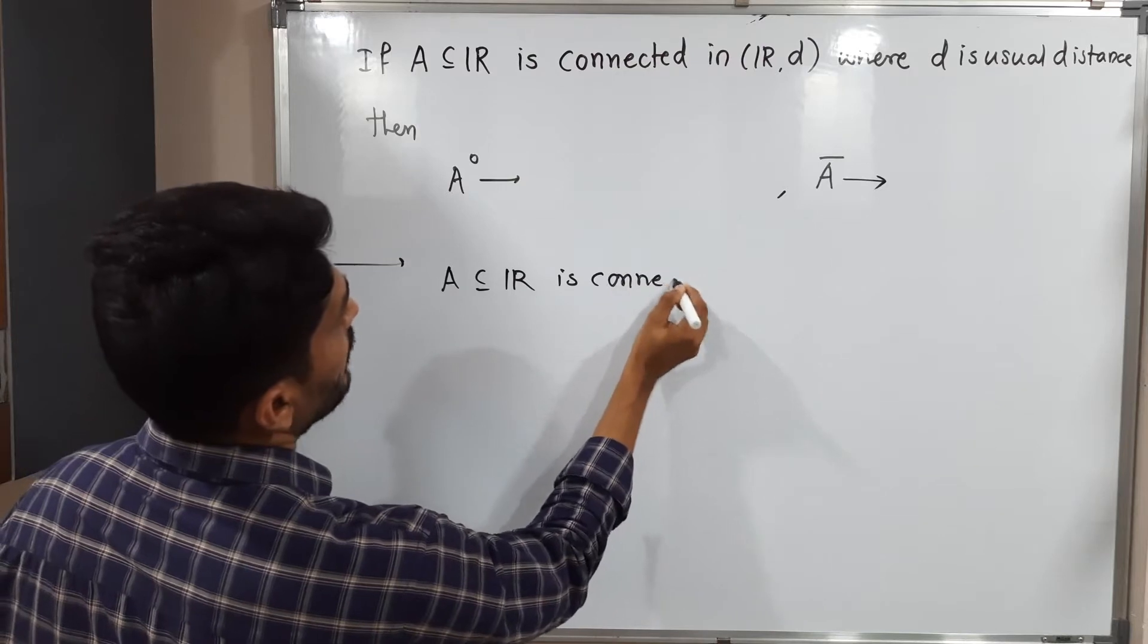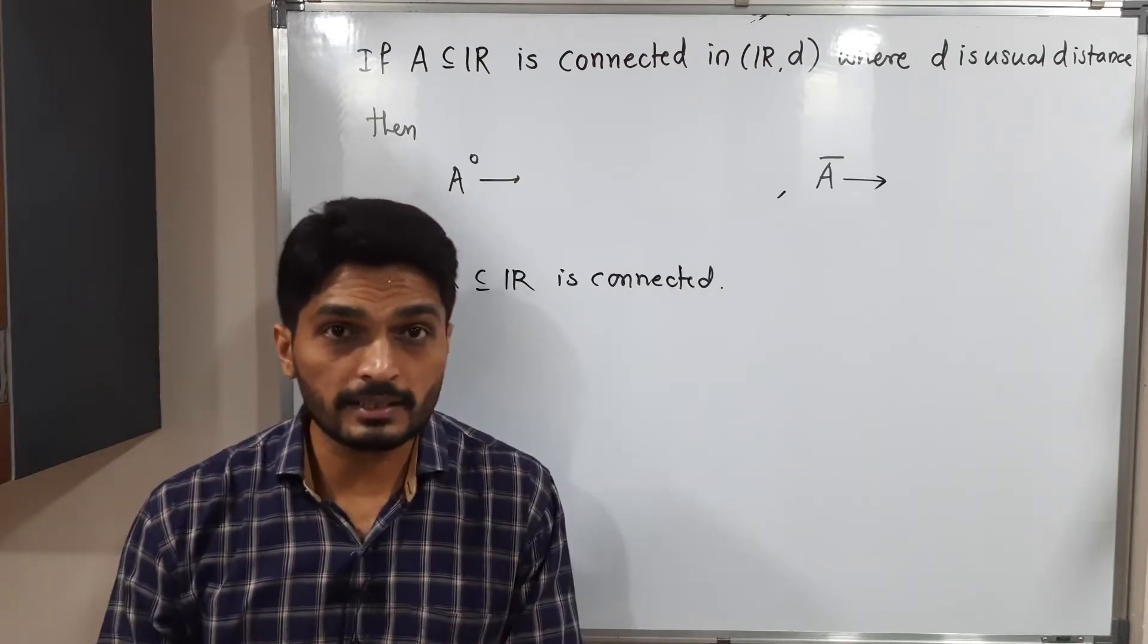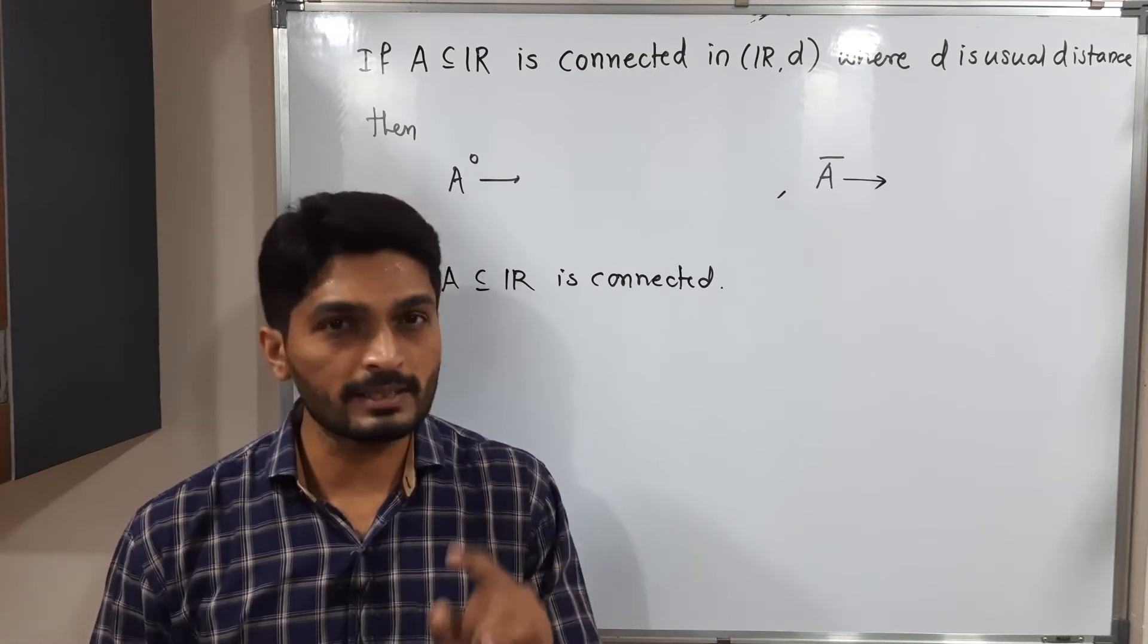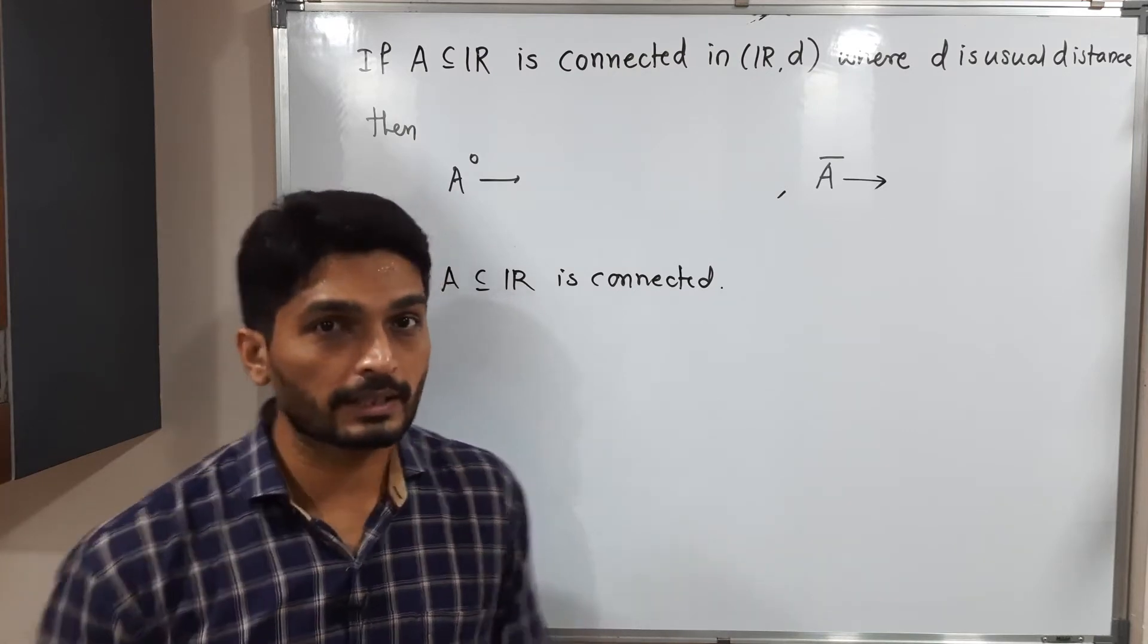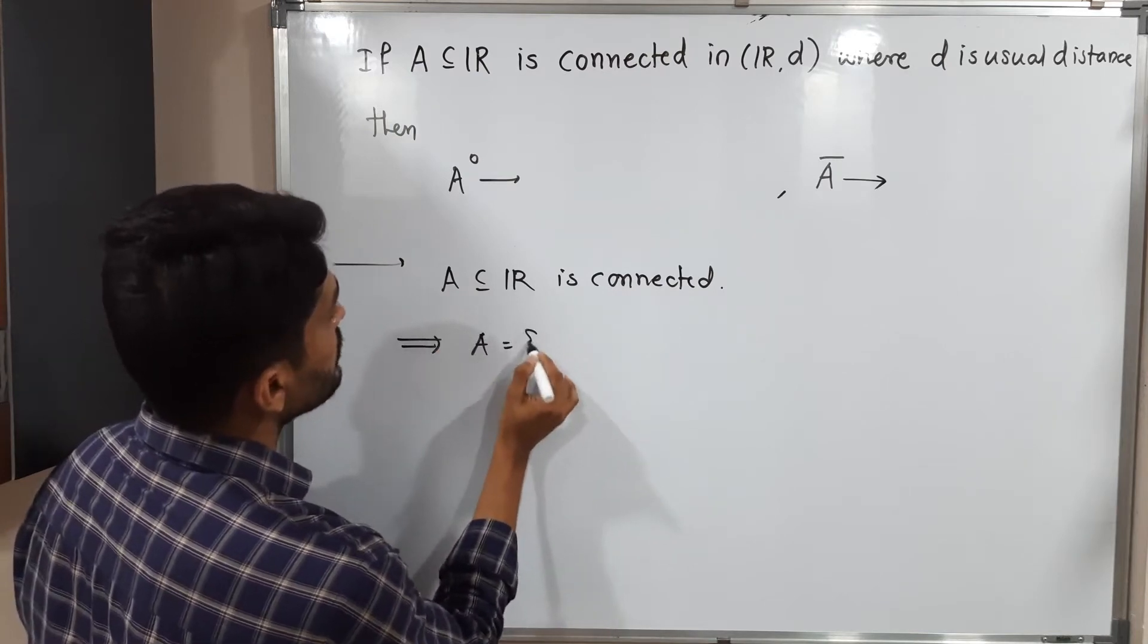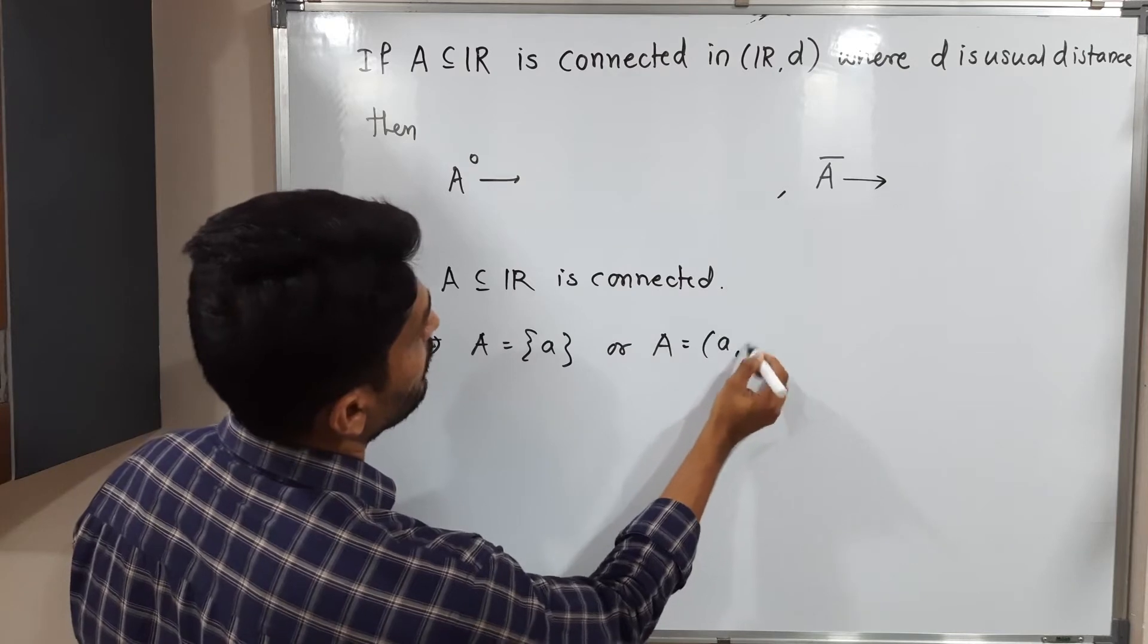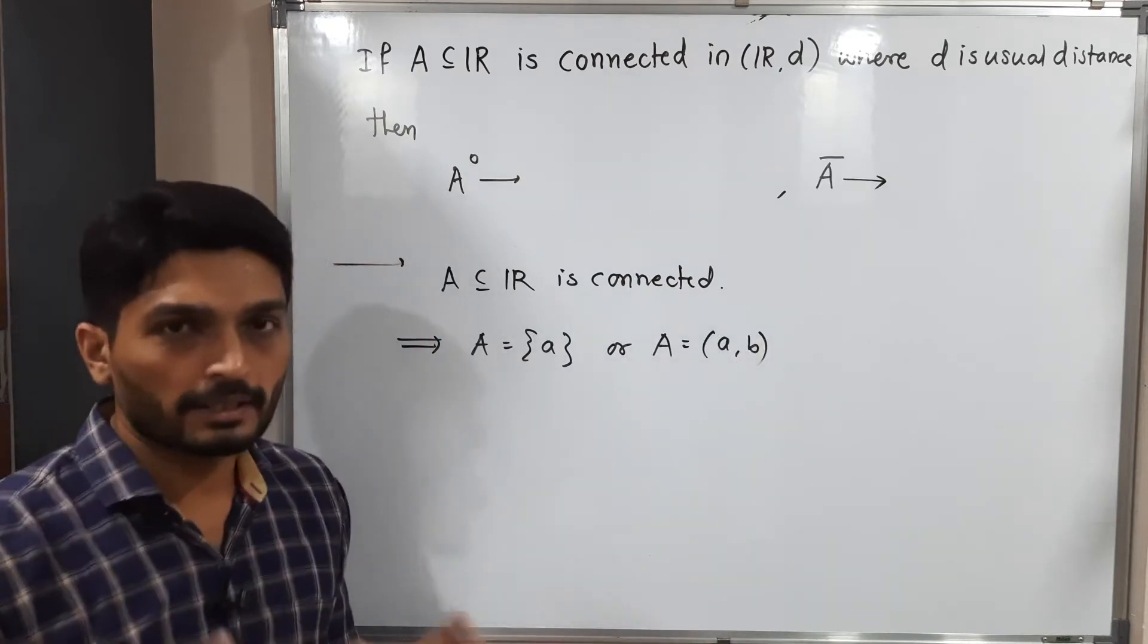We know that connected subsets of R which are non-empty are singleton sets and intervals. So A subset of R which is connected, that means A is equal to a singleton set or A is an interval - open interval, closed interval, does not matter, it is an interval.